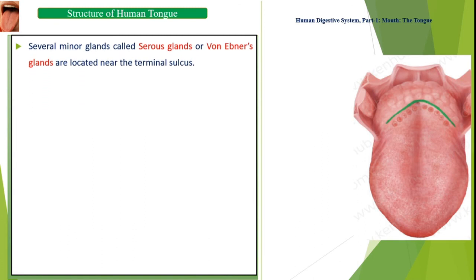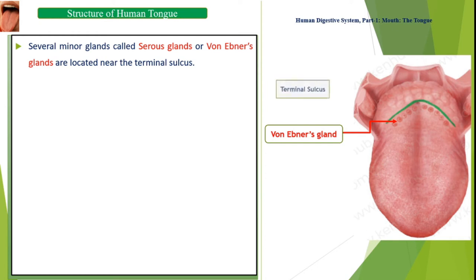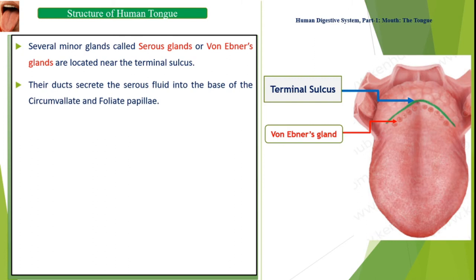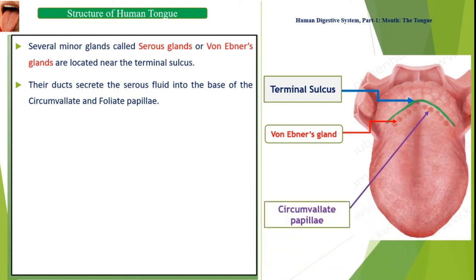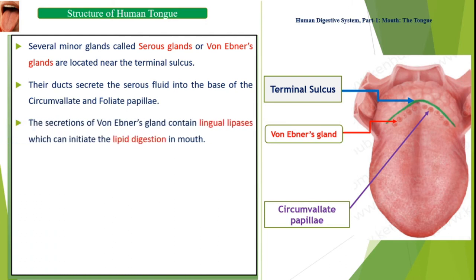Several minor glands called serous glands, or Von Ebner's glands, are located near the terminal sulcus. Their ducts secrete serous fluid into the base of the circumvallate and foliate papillae. The secretions of Von Ebner's glands contain lingual lipases, which can initiate lipid digestion in the mouth.